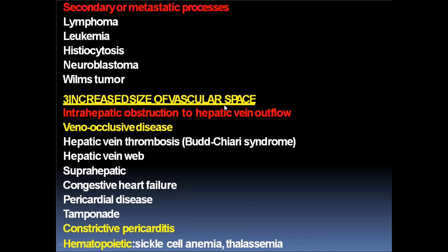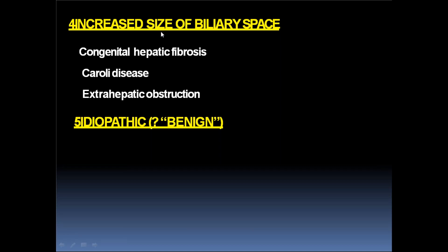Increased size of vascular space: intrahepatic obstruction to hepatic vein flow — veno-occlusive diseases like hepatic vein thrombosis in Budd-Chiari syndrome, hepatic vein web. Suprahepatic causes: congestive heart failure, pericardial disease, cardiac tamponade, and constrictive pericarditis — as in TB pericarditis where the pericardium becomes thick and fibrosed. Hematopoietic causes like sickle cell anemia and thalassemia. Increased size of biliary space in congenital hepatic fibrosis, Caroli disease, and extrahepatic obstruction. Idiopathic benign causes also exist.